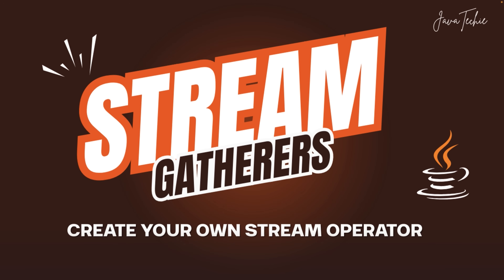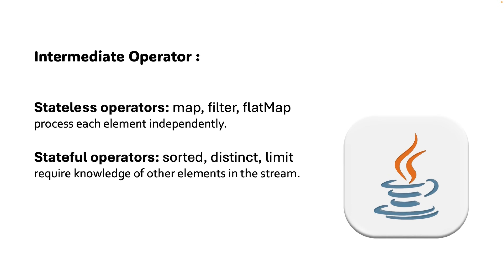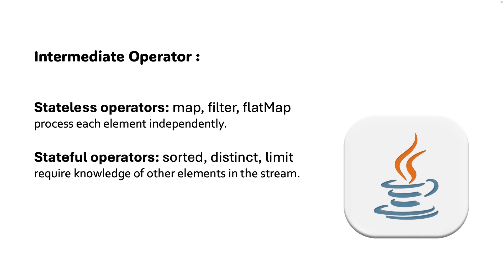Before we start writing our own custom operator, let's look at the intermediate methods we use in day-to-day life: map, filter, flatMap, sorted, distinct, limit, and many more. Those operators are categorized into two parts. Some intermediate operators come under stateless operators — like map, filter, and flatMap — because they process each element independently with no need to remember the state of the previous element.